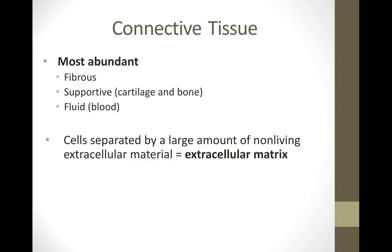When we talk about connective tissue, there are three different types: fibrous, supportive, and fluid. Connective tissue in general is the most abundant kind of tissue in the body. There is a large space that separates the cells within connective tissue, and that space is referred to as the extracellular matrix. 'Extra' implies outside, 'cellular' means outside the cell, and 'matrix' basically means the background.